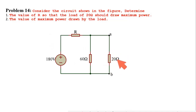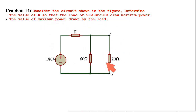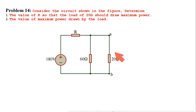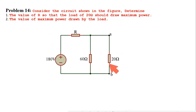The next part is to find the value of maximum power drawn by the load. According to the maximum power transfer theorem, maximum power will be transferred to the load when the load resistance is equal to the source resistance.